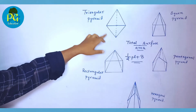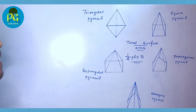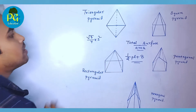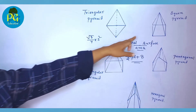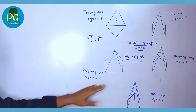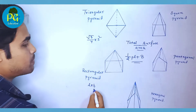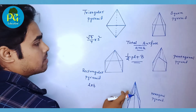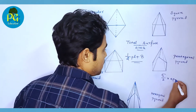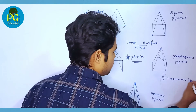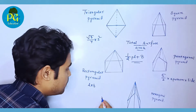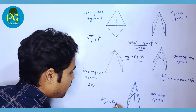For a right pyramid whose base is an equilateral triangle, the area of the base = (√3/4) × side². The area of a square base = side × side. If it is a rectangle, the area = length × breadth. If it is a pentagon, the area = (5/2) × apothem × side. If it is a hexagon, the area = (3√3/2) × side².